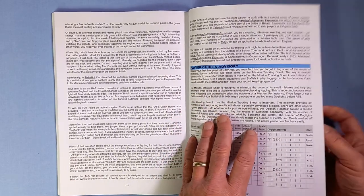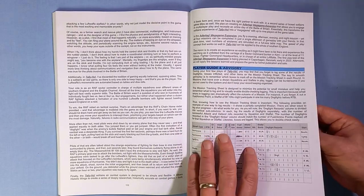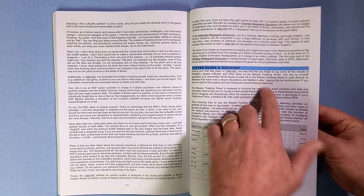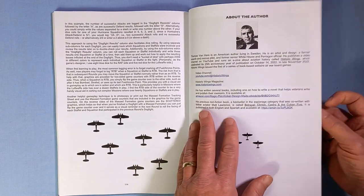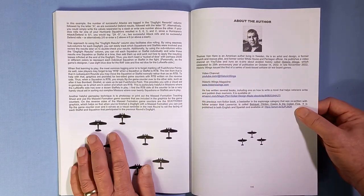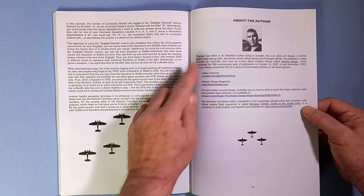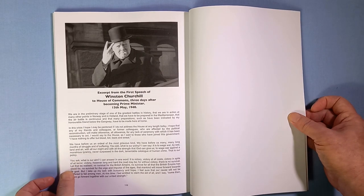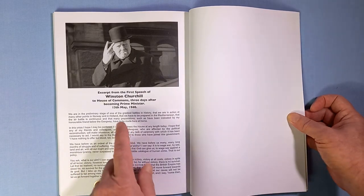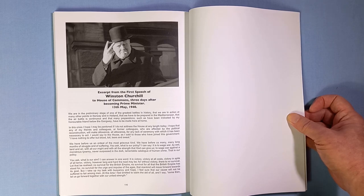Player guide and advisory. Things not to forget, especially when you're doing your mission tracking sheet. And there's Thomas. So here's his YouTube channel, here's his Historic Wings magazine channel - I'll put these in the description. And here's Winston's, or an excerpt from Winston's first speech in the House of Commons three days after becoming Prime Minister, on the 13th of May 1940.